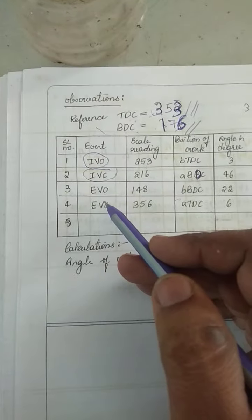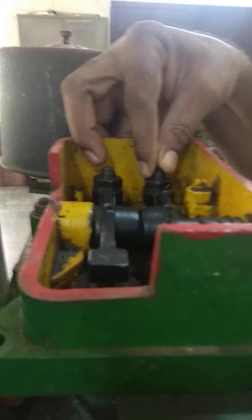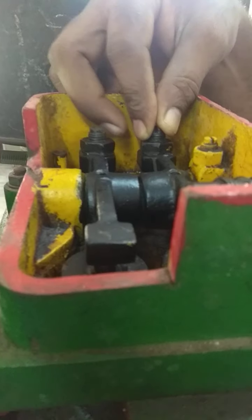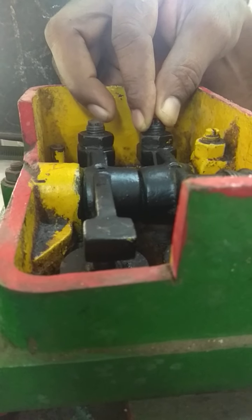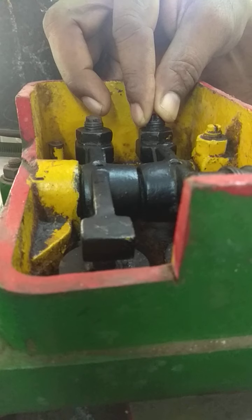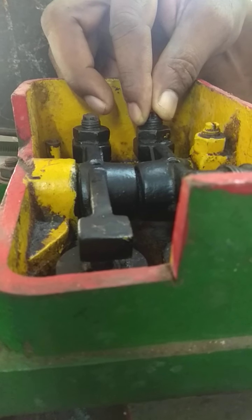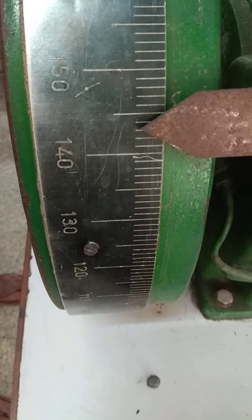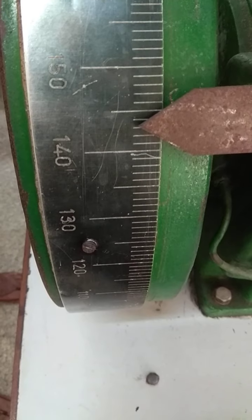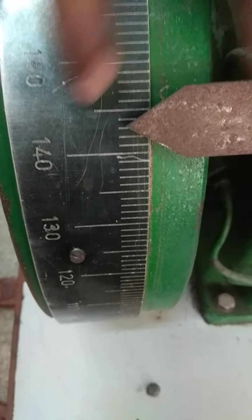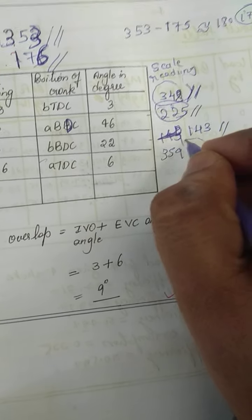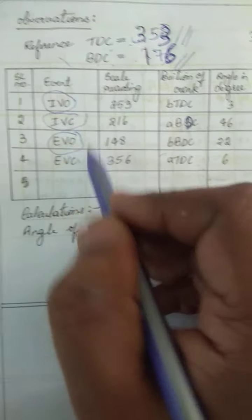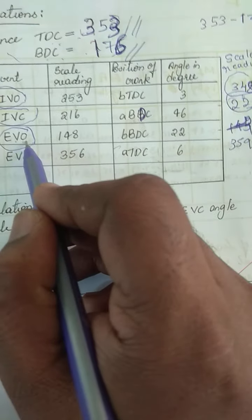Next we will find the exhaust valve opening angle. This is the exhaust valve. Rotate the wheel in the clockwise direction until this valve gets tightened. When it just gets tightened, stop the rotation and note down the value. The angle at which the exhaust valve has just opened is 143. Note down 143 as the exhaust valve opening angle.